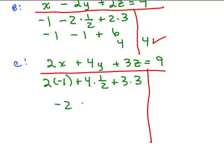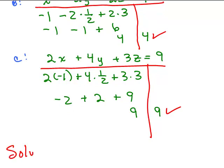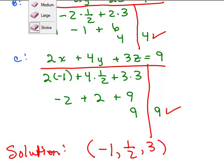The answer is negative 1, one half, 3. This is not the only way to solve this — there are about ten different approaches depending on which equations you combine first, whether you use elimination or substitution. Make sure you check your work because it's very easy to make a mistake. Be careful with positive and negative signs, copying problems correctly, and distributing on both sides. With three variables and three linear equations, you need lots of paper, space, and organization.